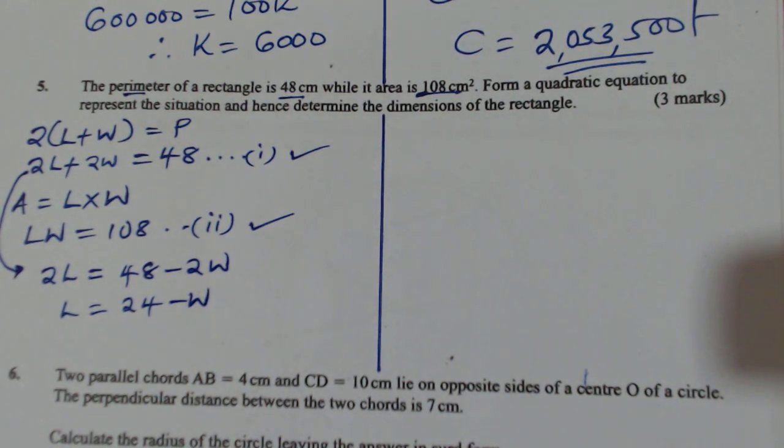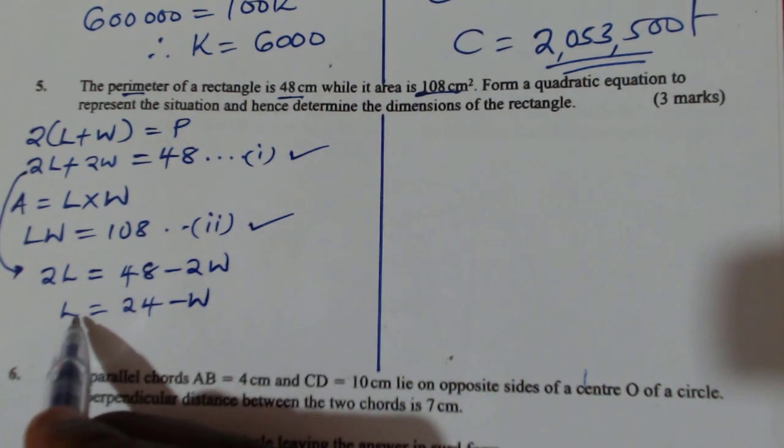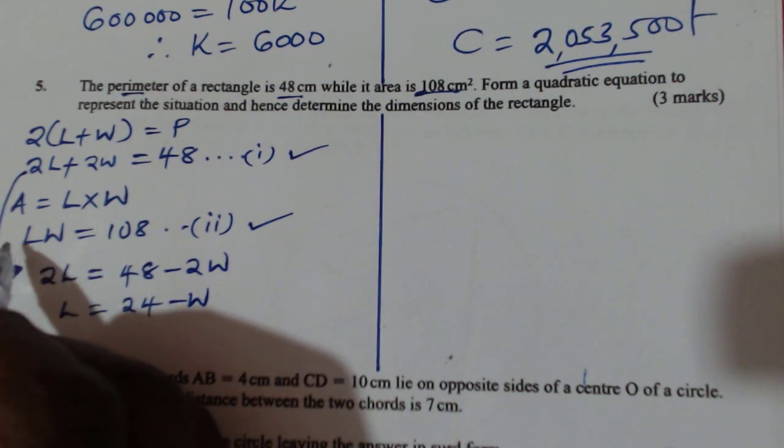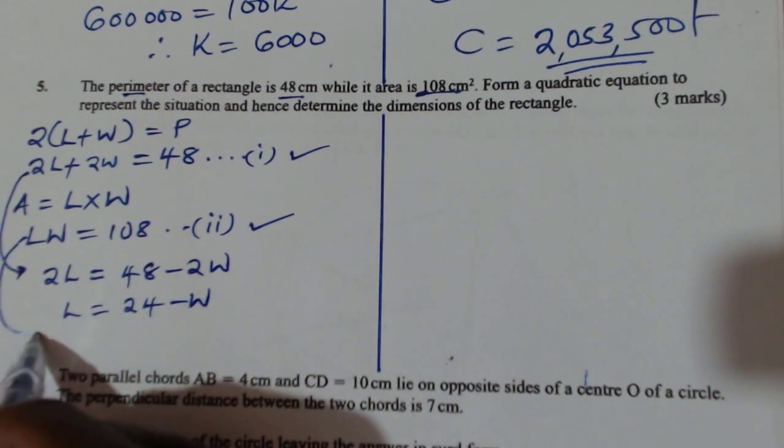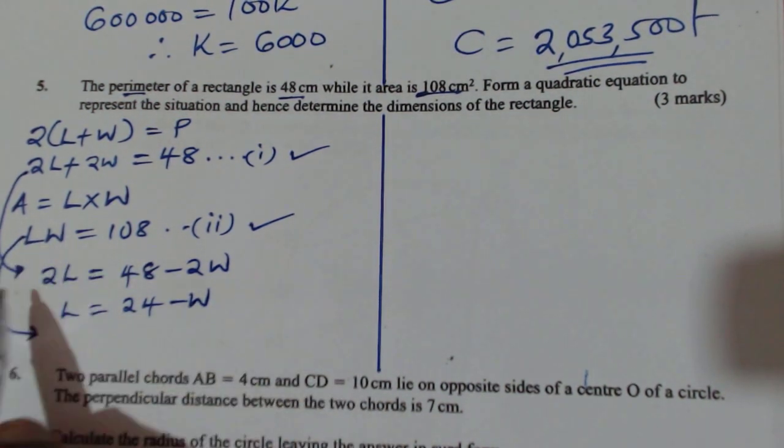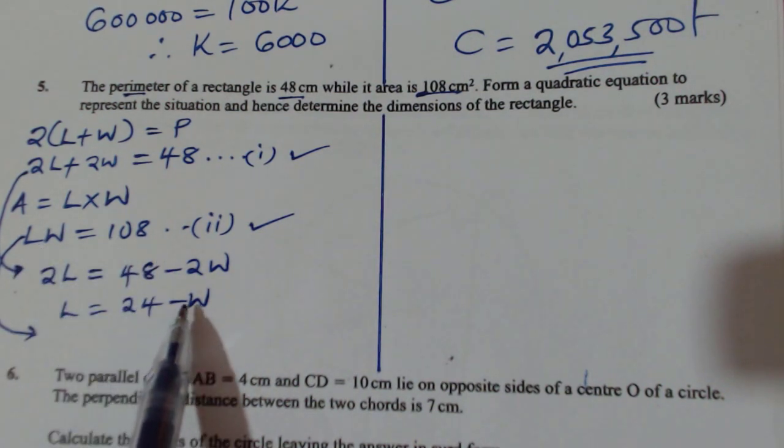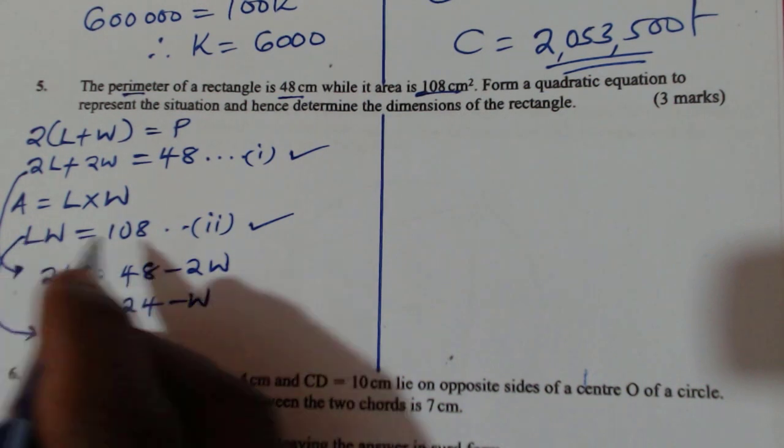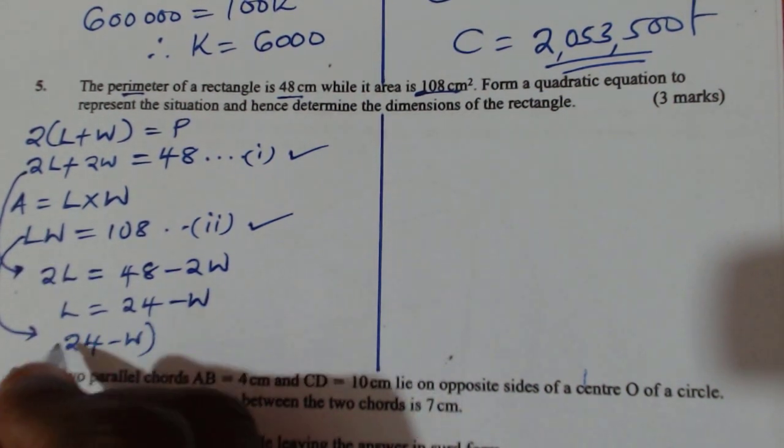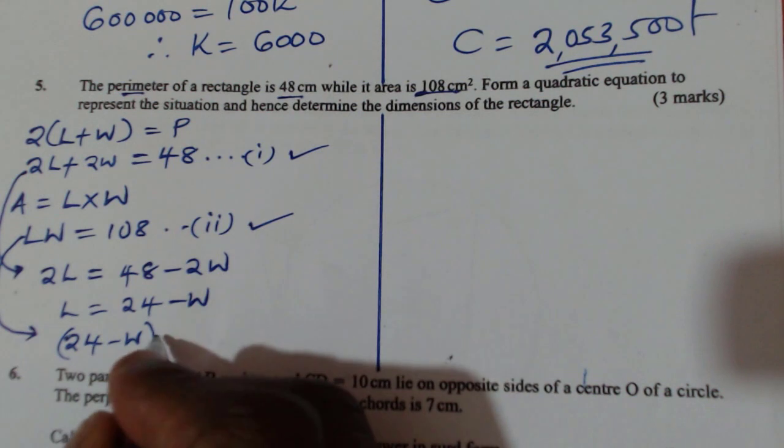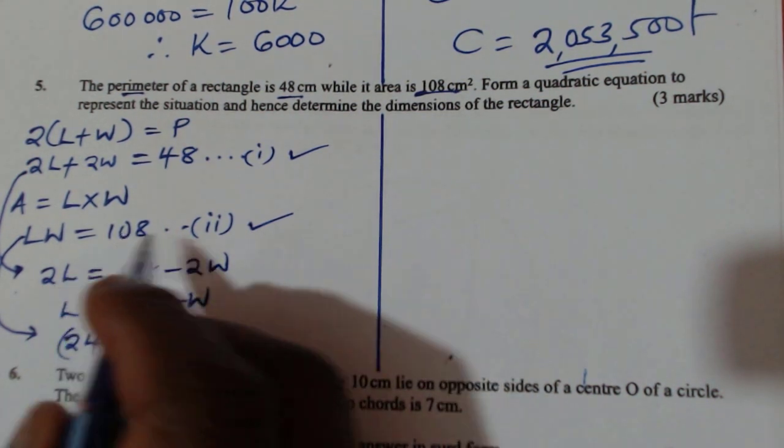Having obtained that, we can substitute this value of L in this equation, LW equals 108. So when L is 24 minus W, just substitute. So L is 24 minus W, multiply by W. This will give 108.